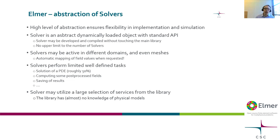The success of Elmer as a multiphysics code builds quite a lot on the abstraction of these solvers. Because of the high level of abstraction, we can be quite flexible in implementation and also in simulation. A solver is an abstract, dynamically loaded object with a standard API — we can develop and compile those without touching the main library. There is no upper limit to the number of solvers: you can have 1, 2, 5, 10, 12, or however many you need, depending on the complexity of your problem. Solvers may be active in different domains and even different meshes.